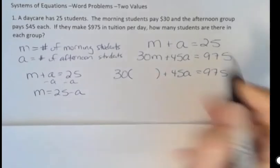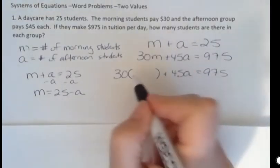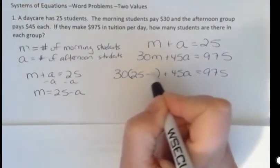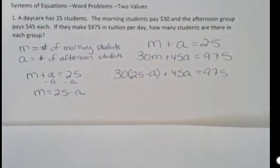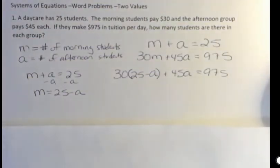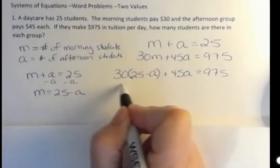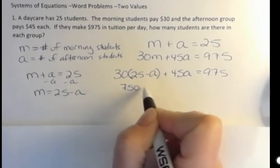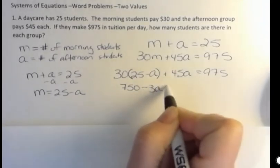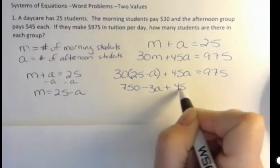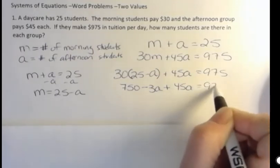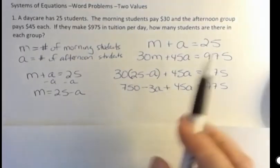Remember you can use calculators whenever you need them. I do. I check my math a lot of times using a calculator because I find that that's helpful. Anyway, this is going to be 750 minus 30A plus 45A is 975. I'm just distributing there.